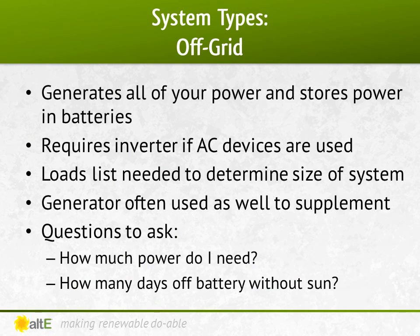Unlike a grid-tied system where you can just base a system on how much power you want to offset, an off-grid system needs to provide all of your power. You need to take a look at what you are powering and how long you need to power it. Going off-grid often takes changes to your lifestyle — it's not as simple as saying you're tired of paying the electric company and taking the whole house off-grid. You have to figure worst-case scenarios: wintertime, with little to no sun for days. Most people doing a year-round off-grid system will have a generator available to pitch in for the winter.